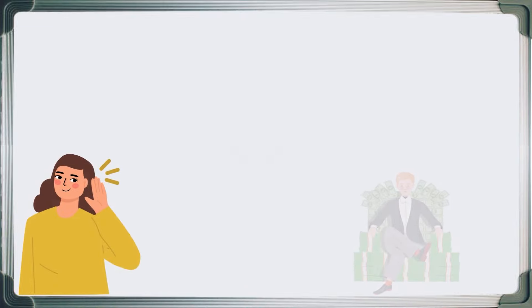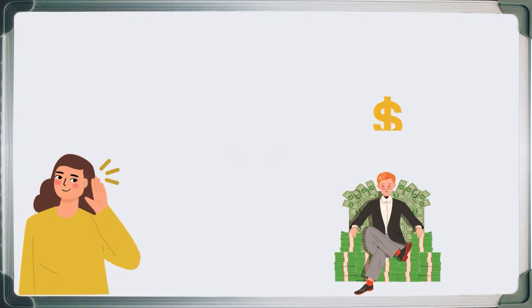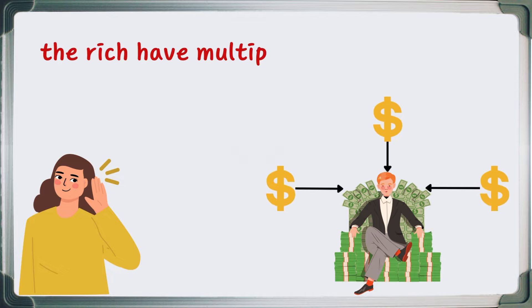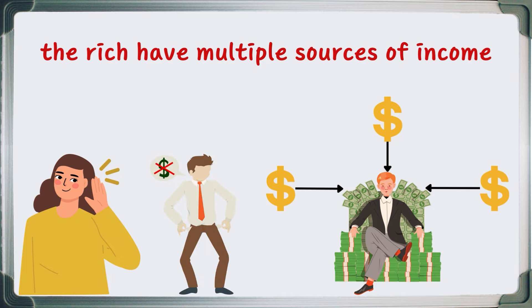Probably you've heard many times that most millionaires have multiple streams of income constantly flowing into their pockets. But if you haven't, welcome. However, an average person usually has only one source of income, which is typically their job.